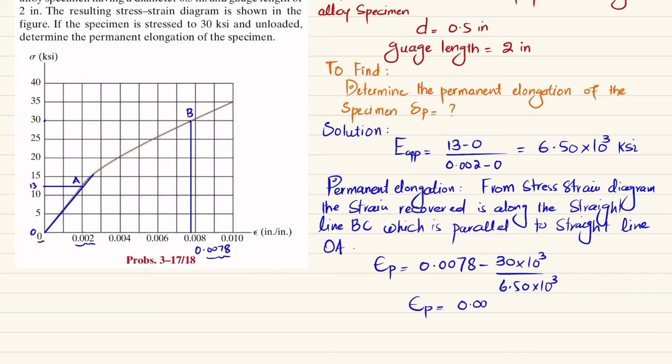That will give you the permanent strain in that object, which is 0.00318 inch per inch. So after removing this 30 ksi load, it will come back to this point. You can see this line BC is parallel to the initial line of the stress-strain diagram.